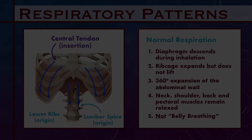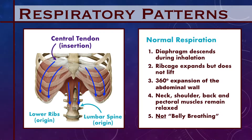So what does a physiologically normal breathing pattern look like? During normal respiration, the diaphragm descends in the thorax by pulling the central tendon down towards its origin at the spine and the lower ribs. The rib cage should expand but does not lift. The spine and pelvis remain neutral. The neck, shoulder, chest, and back muscles all remain relaxed, and there is a 360-degree expansion of the abdomen. It must be stressed that this is not belly breathing.